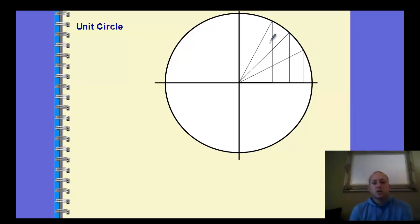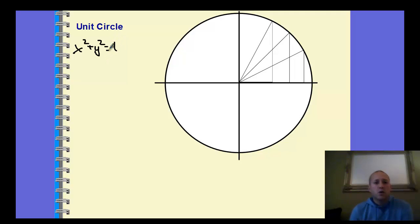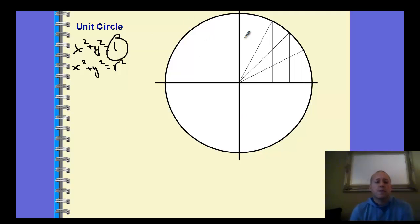The unit circle is created from the equation X² + Y² = 1. From geometry this is really X² + Y² = R², confirming the radius is 1. We're going to look at some properties of this unit circle, starting with how to read the degree or radian measure.